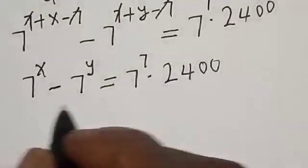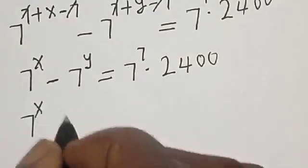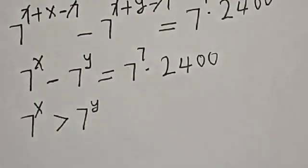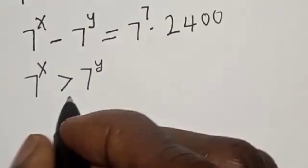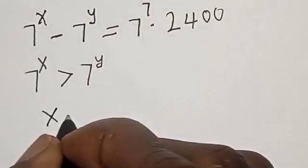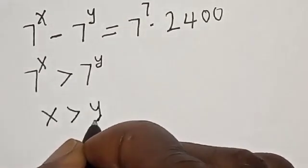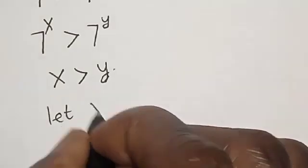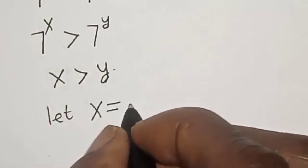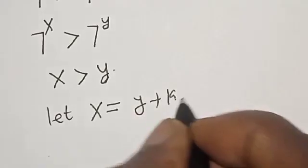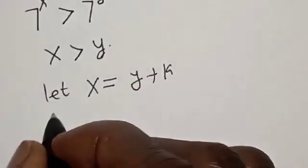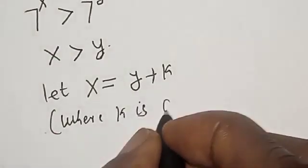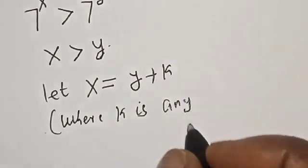Now, remember that 7 raised to the power x is greater than 7 raised to the power y because we want to find the integer solution. This implies that s is greater than y. Now, we say let s equal y plus k, where k is any integer.